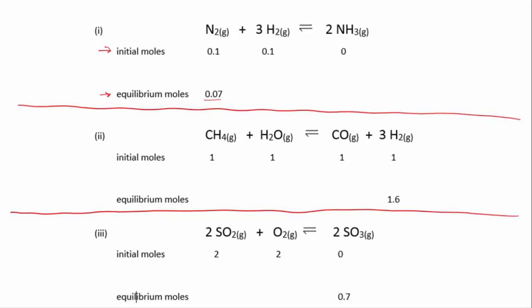So what I'm going to do is put an extra row in the middle of this table which I'm going to call moles used or produced - you could call it perhaps the change in moles. So you can see that for nitrogen...